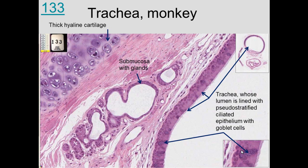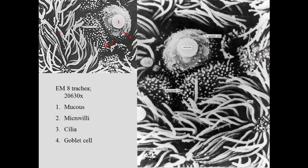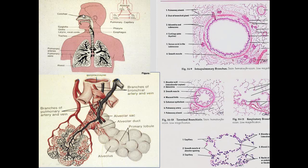In the trachea of a monkey specimen, you can see the hyaline cartilage, perichondrium, submucosal glands, and respiratory epithelium with a very thick basement membrane. At higher magnification, you see ciliated cells, goblet cells with secretions, basal bodies of the cilia, a thick basement membrane, rich vascular supply, and plasma cells in the lamina propria producing antibodies against antigens inhaled with the air. Under scanning electron microscopy, individual cilia, microvilli on goblet cells, and mucous secretions are clearly visible.